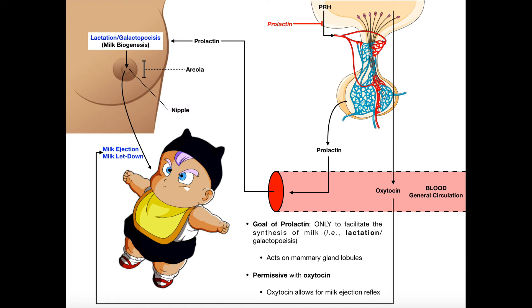Prolactin is not hormone-induced hormone release. Prolactin does not cause the synthesis and release of a hormone. It actually causes the synthesis of milk, which we actually call milk biogenesis.